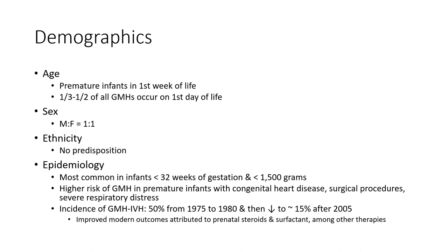Incidence of Germinal Matrix Hemorrhage and intraventricular hemorrhage was around 50% from 1975 to 1980, and then decreased significantly after 2005.